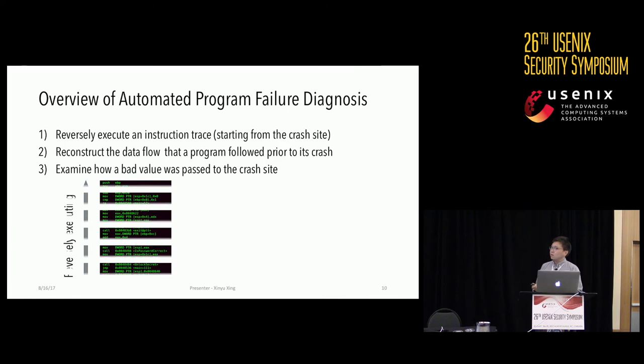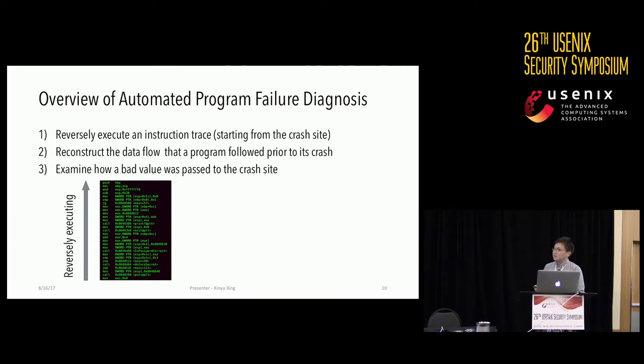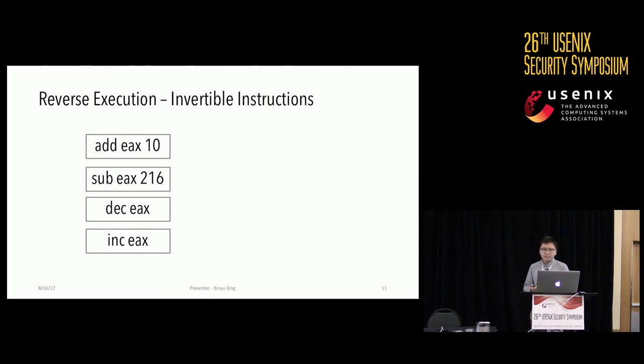In our work, we developed POM to mimic this whole procedure automatically. Specifically, POM first reversely executes an instruction trace starting from the crashing site, then reconstructs the data flow the program followed prior to its crash, and finally uses that data flow to examine how a bad pointer or bad value was passed to the crash site.